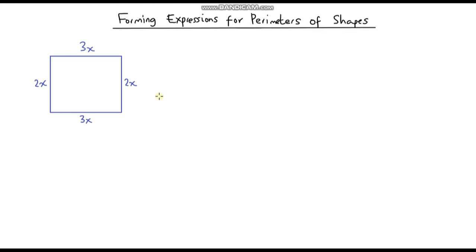In the last lesson we looked at simplifying expressions by collecting like terms, and we're going to apply that to different 2D shapes. If we look at this rectangle here, the width or base is 3x and the height is 2x. Let's form an expression for the perimeter.